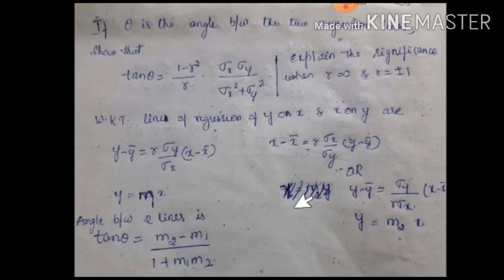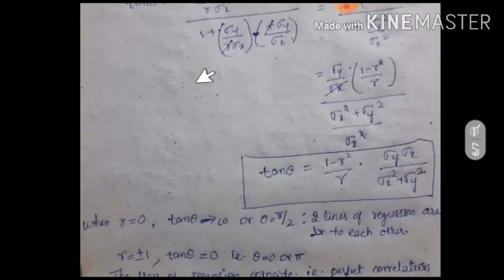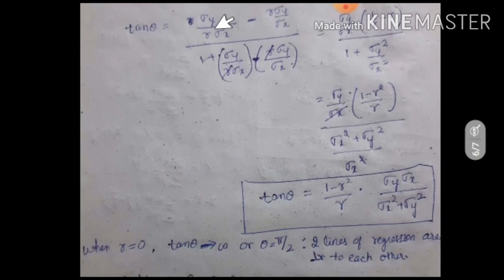We know that angle between two lines is equal to tan theta equal to m2 minus m1 divided by 1 plus m1 m2. To obtain the angle between two regression lines, what is m2 here is sigma y by r into sigma x. What is m1? m1 is nothing but r into sigma y by sigma x. We need to take the slope of regression lines of y on x and x on y, then substitute it.